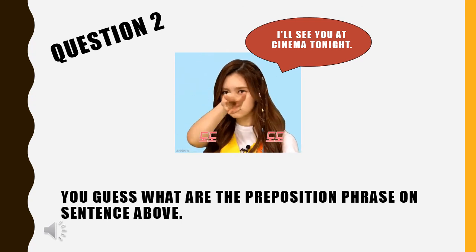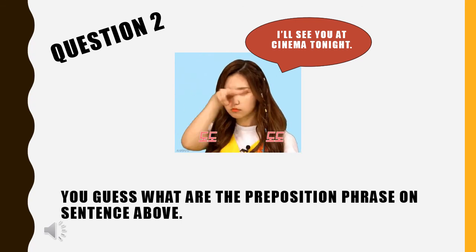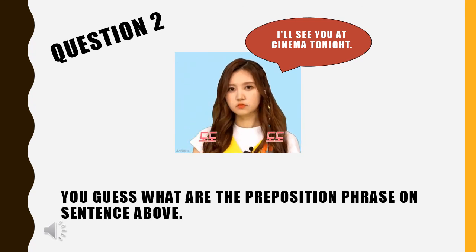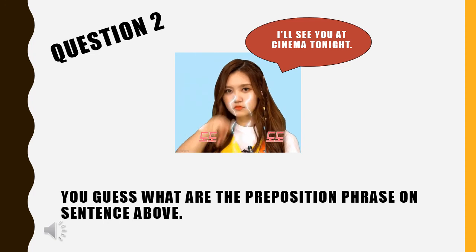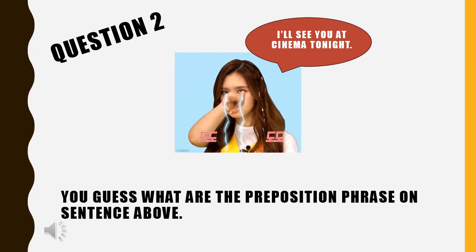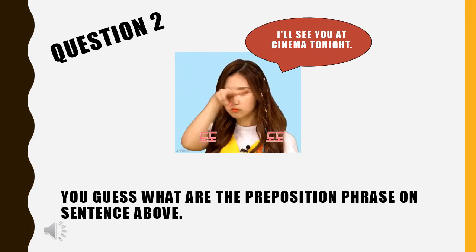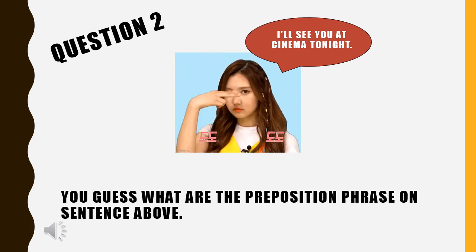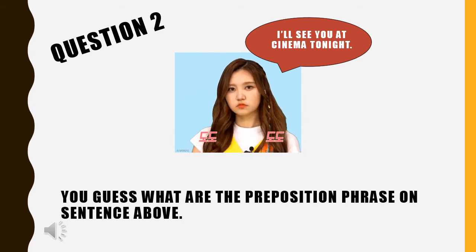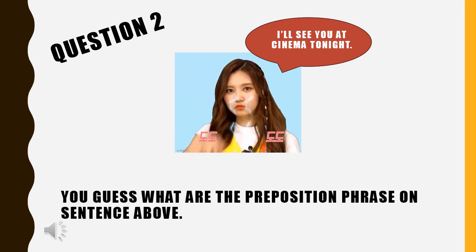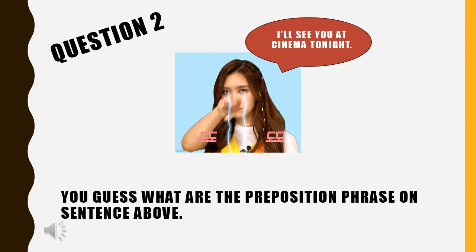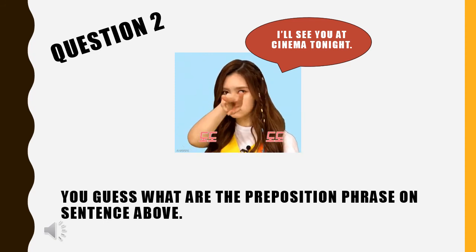For question two: what is the preposition in the sentence 'I'll see you at the cinema tonight'? The answer is 'at' — 'at' is the preposition used to connect this sentence. That's all from all of us. We hope you enjoyed the presentation and understand the use of prepositions in sentences. Thank you.